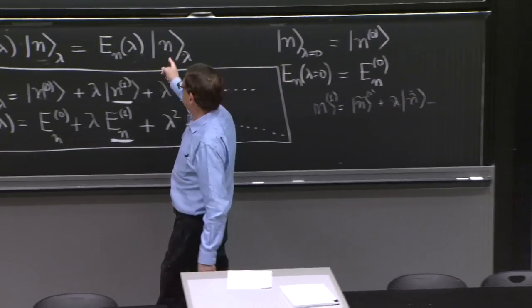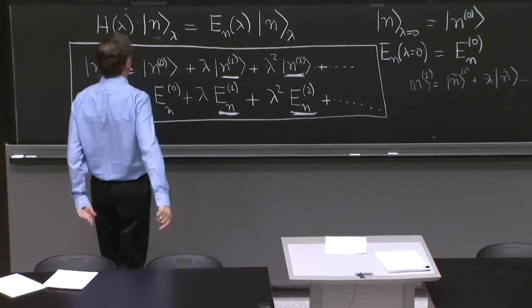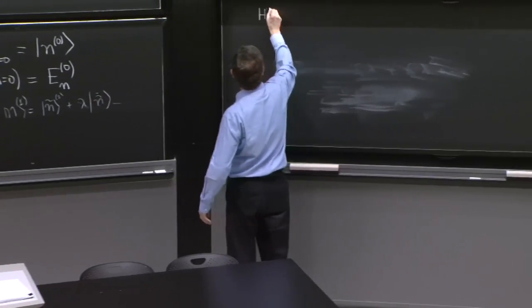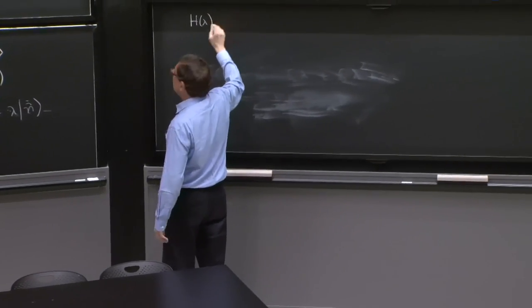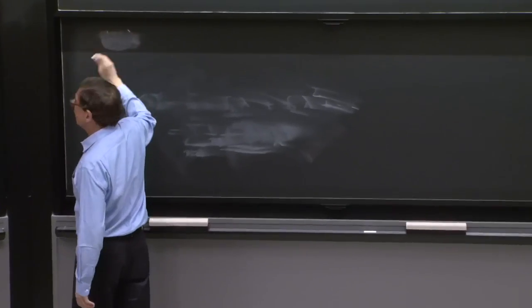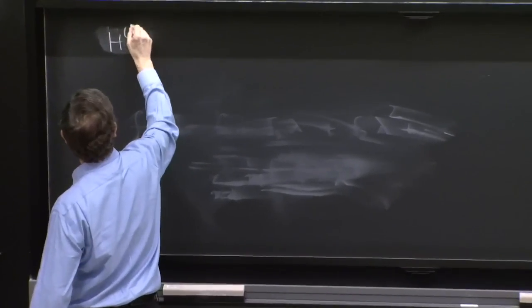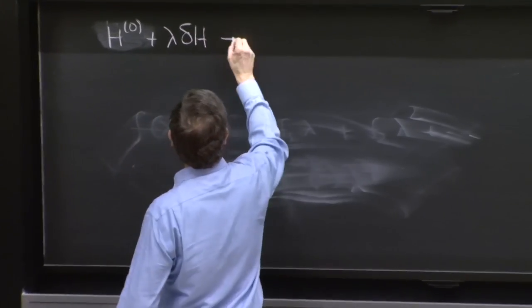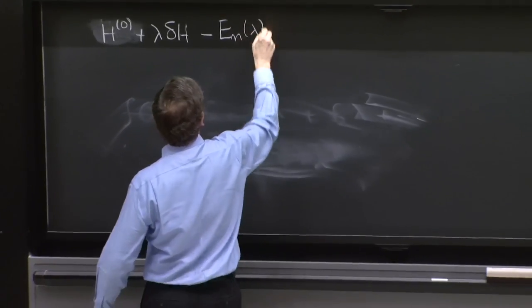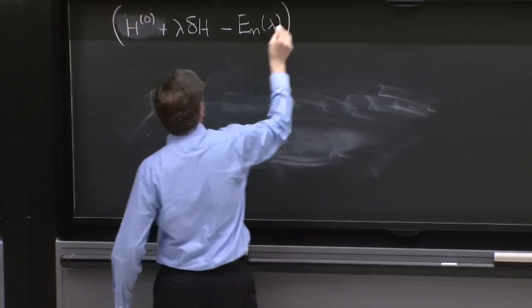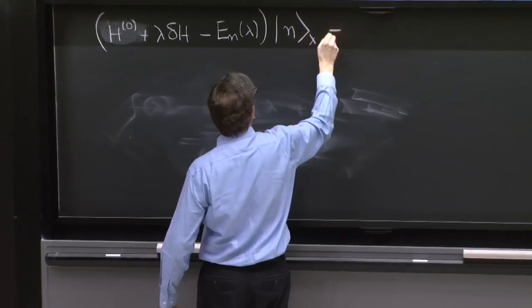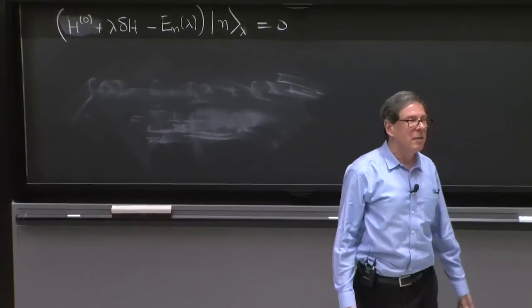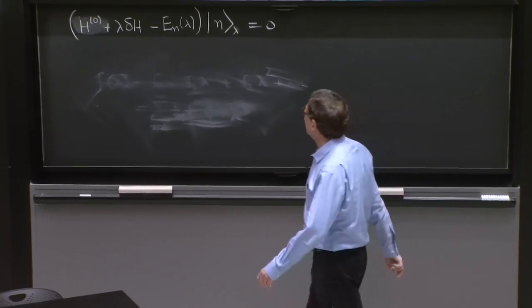So what am I going to do? I'm going to just write this equation slightly differently. I'll write it as H of lambda, which is H0 plus lambda delta H, that's H of lambda, minus En of lambda on the state n of lambda equals 0. That's your Schrodinger equation, the time independent Schrodinger equation we're trying to solve.